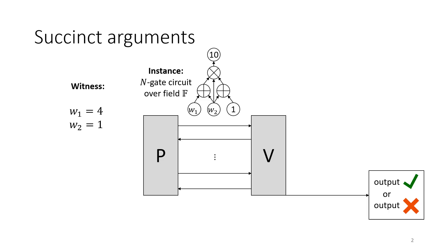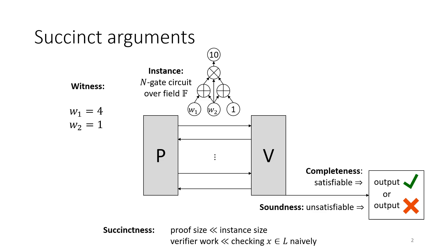Succinct arguments should satisfy a few properties including completeness and soundness, and they should have proof sizes much smaller than the size of the instance — so sublinear, or hopefully even polylogarithmic in N. Similarly, the verification time should be much less than the time taken to check whether the instance is true directly.